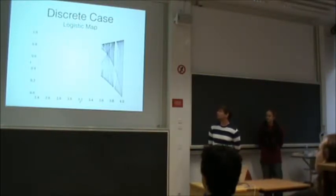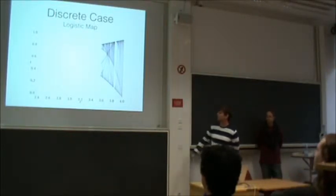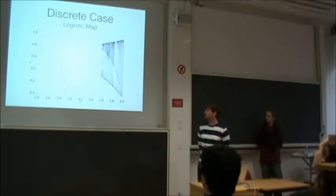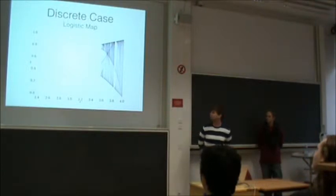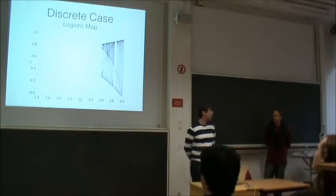In a bifurcation plot — which Klaas showed in his lecture — we have r on the x-axis and can see that for small values it always converges to one value, but for larger values we enter the chaotic regime. Next we'll talk about the continuous case.